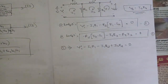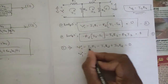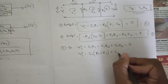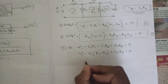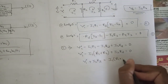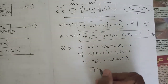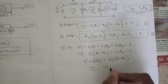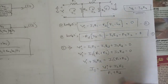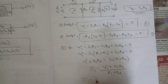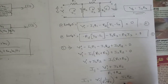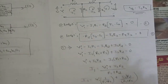From equation 1, take I1 as common: Vi minus I1·(R1 + R2) + I2·R2 = 0. Bringing terms to one side: Vi + I2·R2 = I1·(R1 + R2). So I1 = (Vi + I2·R2) / (R1 + R2), which can also be written as I1 = Vi·[1/(R1+R2)] + I2·[R2/(R1+R2)].